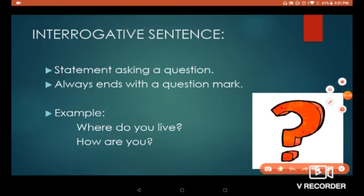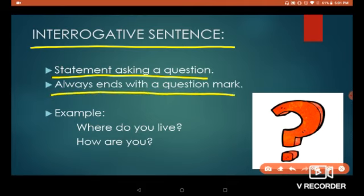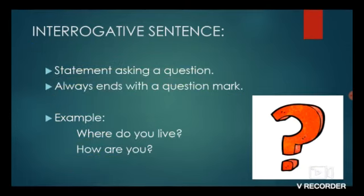Now let's see what an interrogative sentence is. A statement asking a question is called an interrogative sentence. An interrogative sentence always ends with a question mark. For example: 'Where do you live?' and 'How are you?' These two sentences ask a question and end with a question mark, so they are interrogative sentences.